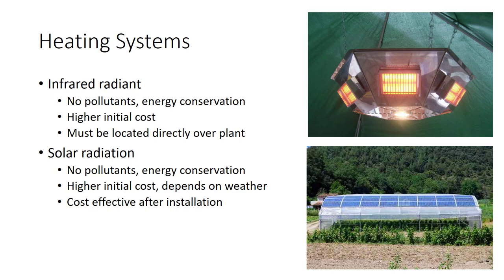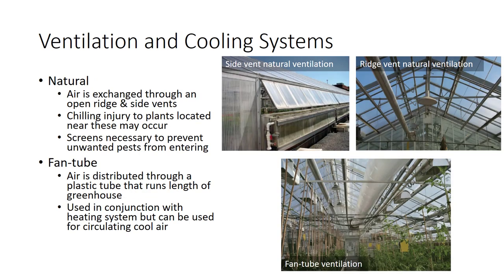To control greenhouse temperatures, good ventilation and cooling systems are also necessary. In natural ventilation systems, air is exchanged through open ridge and side vents — one of the oldest methods of cooling. Chilling injury to plants near the side vents might occur, and screens are necessary to prevent unwanted pests from entering the greenhouse.